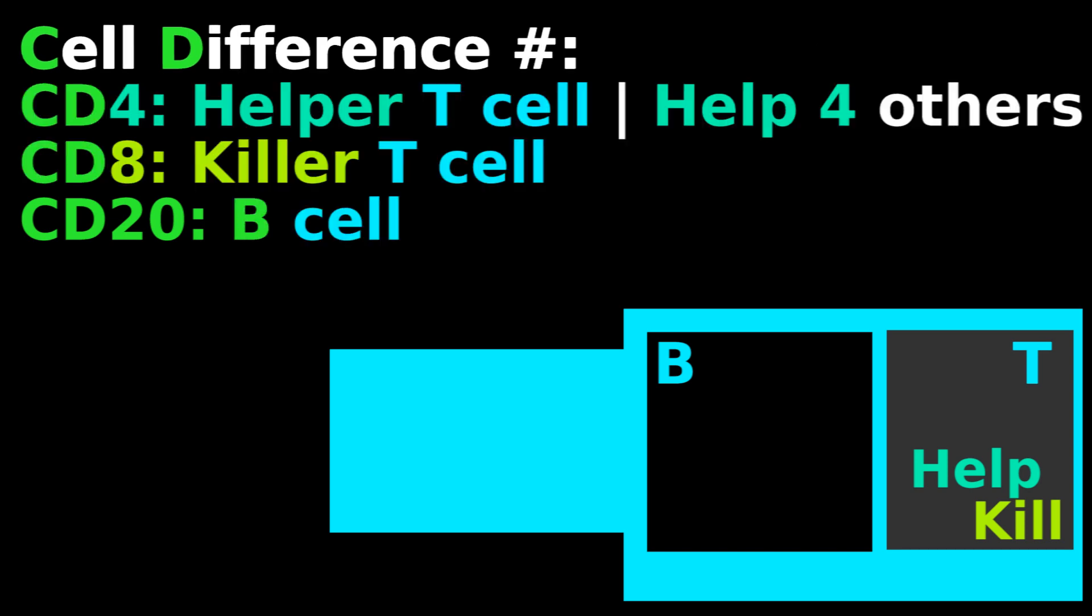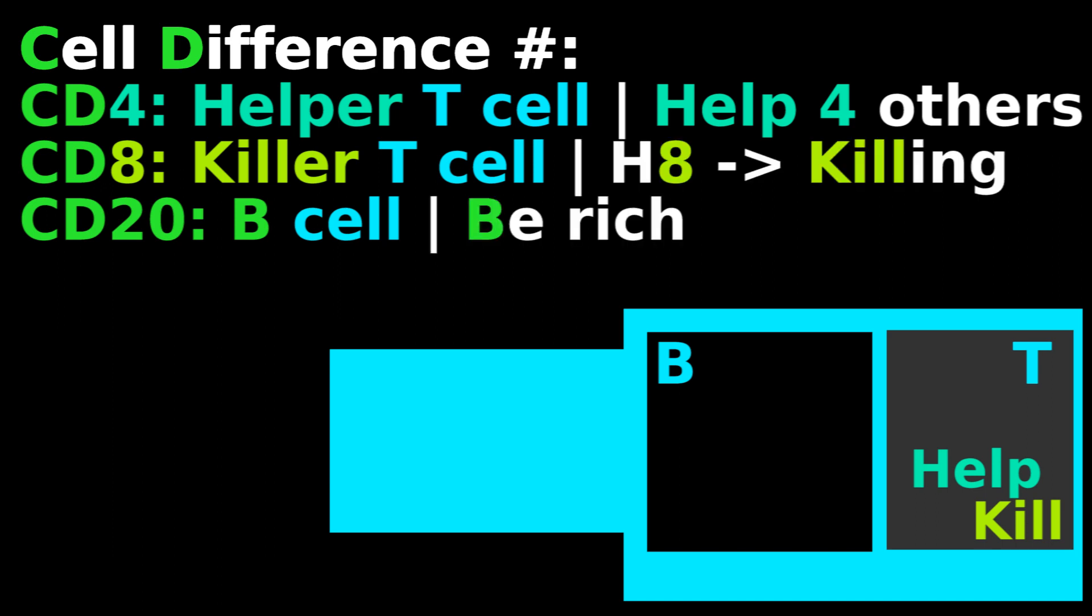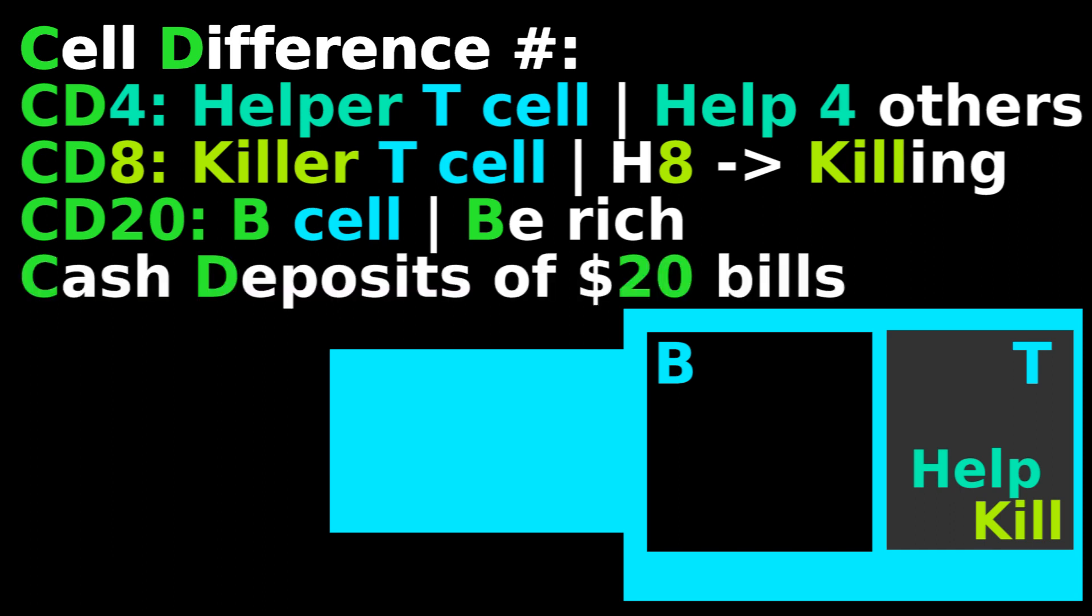Remember it is help for other cells, or it hates cells so much it kills them. Also, you will be rich if you have cash deposits of $20 bills.